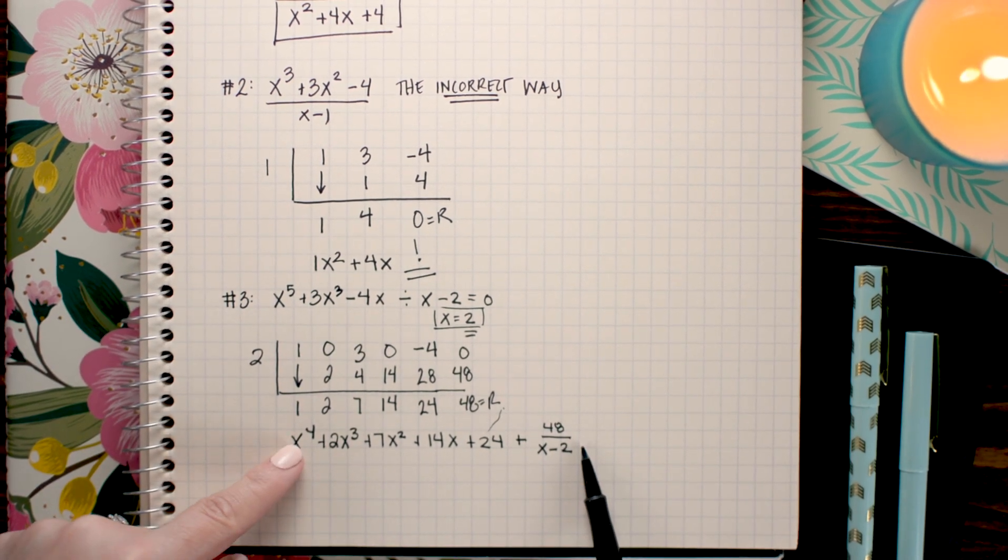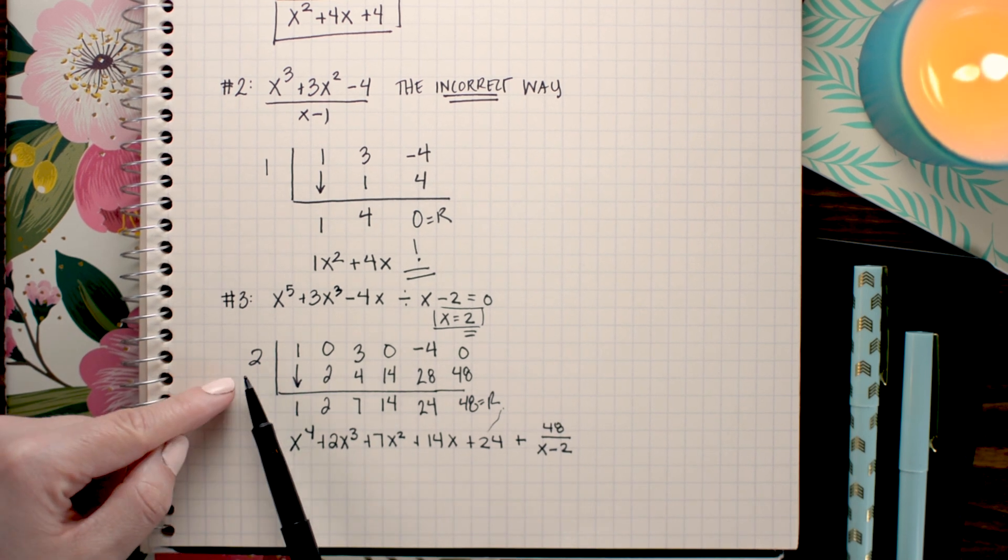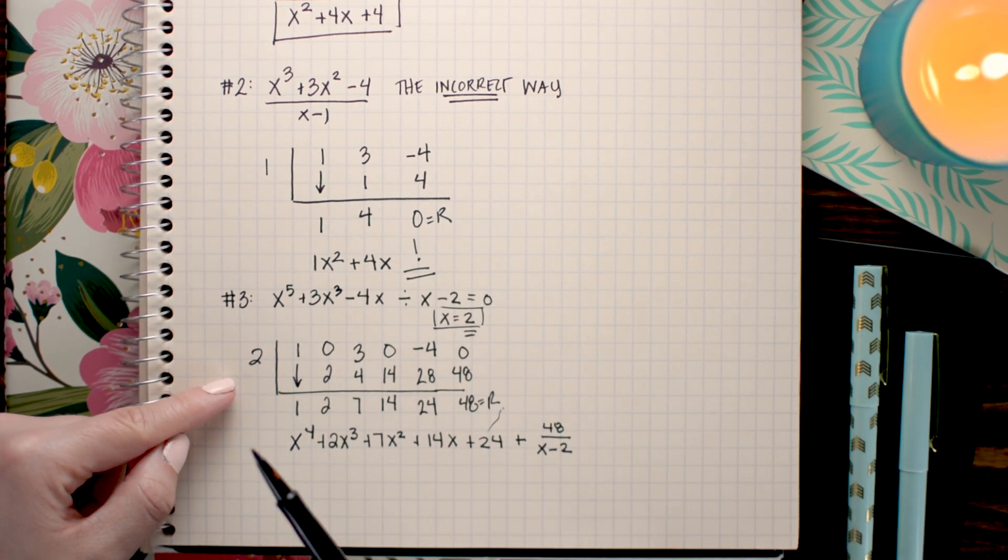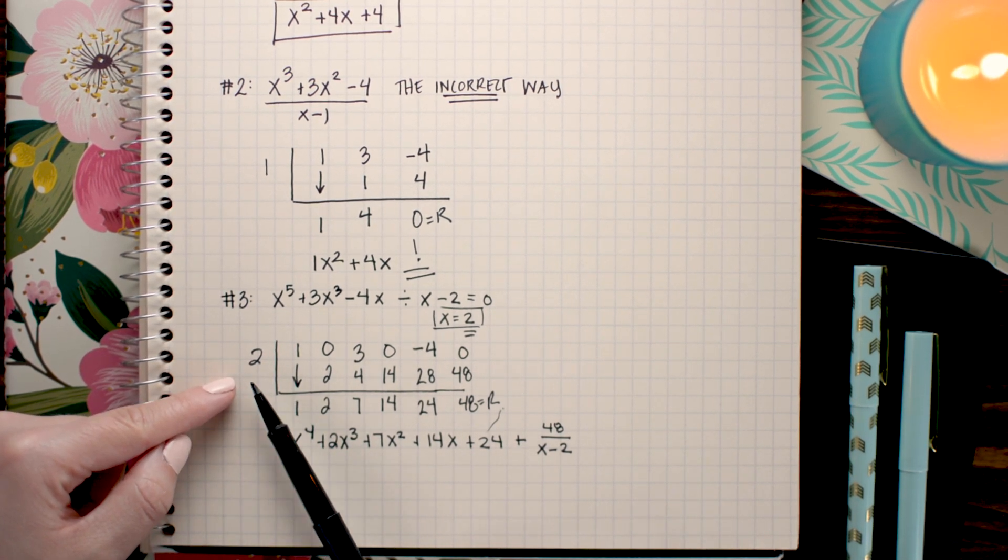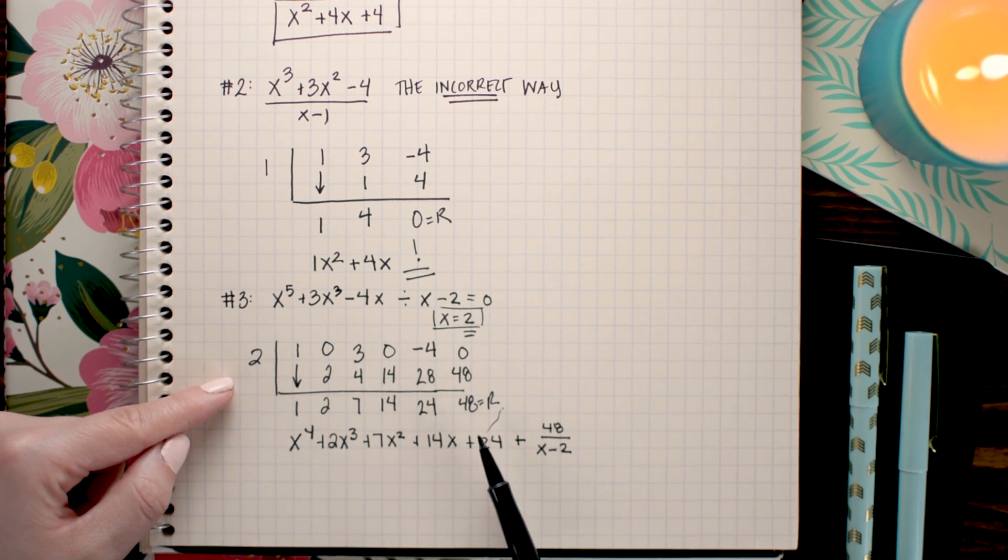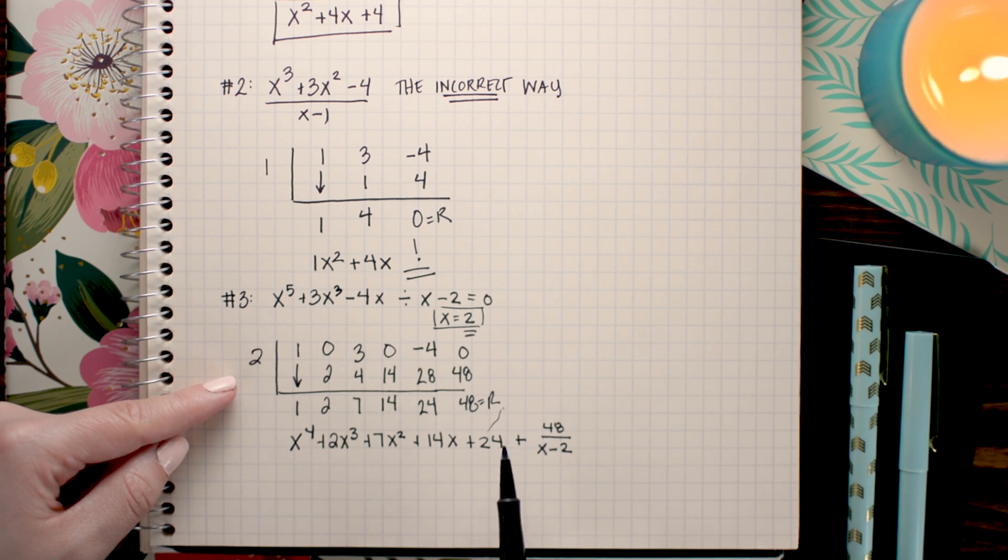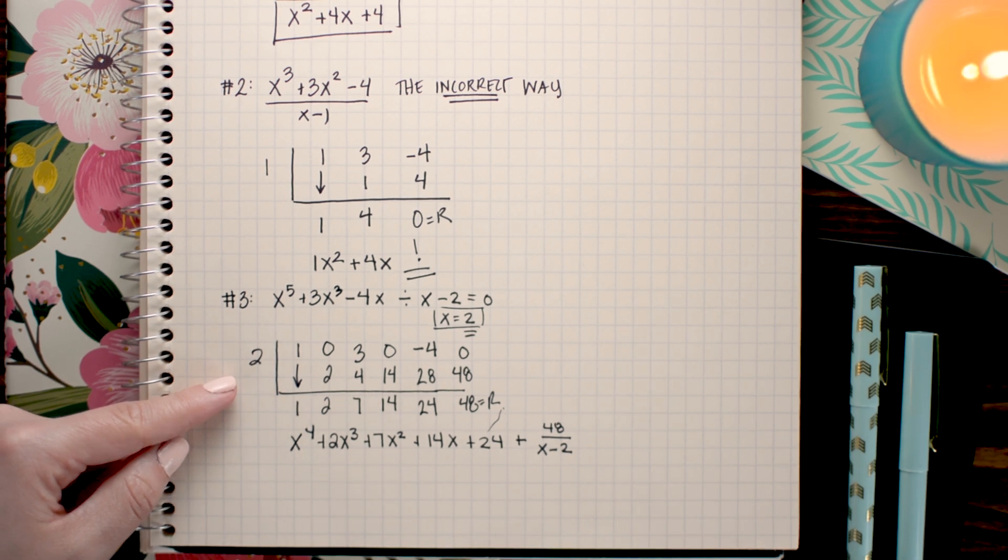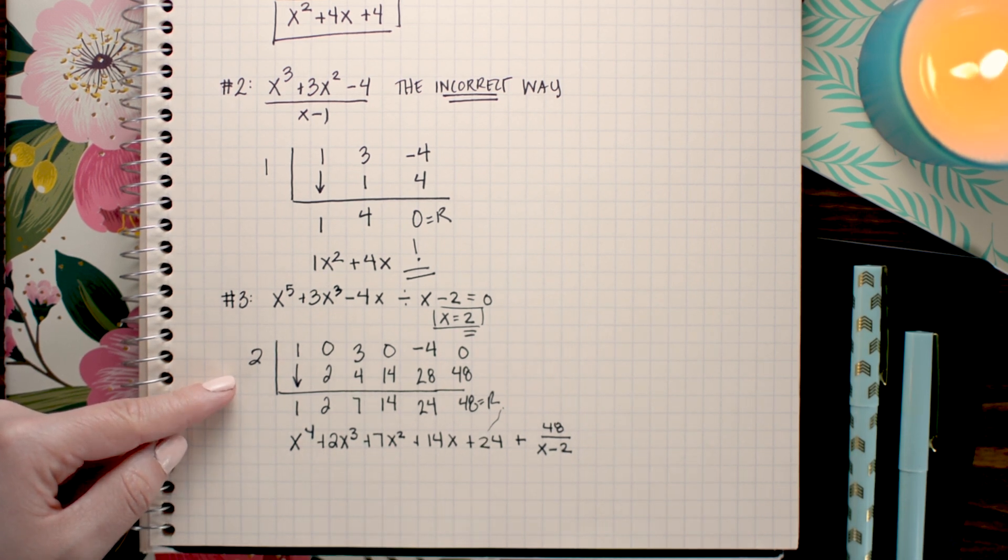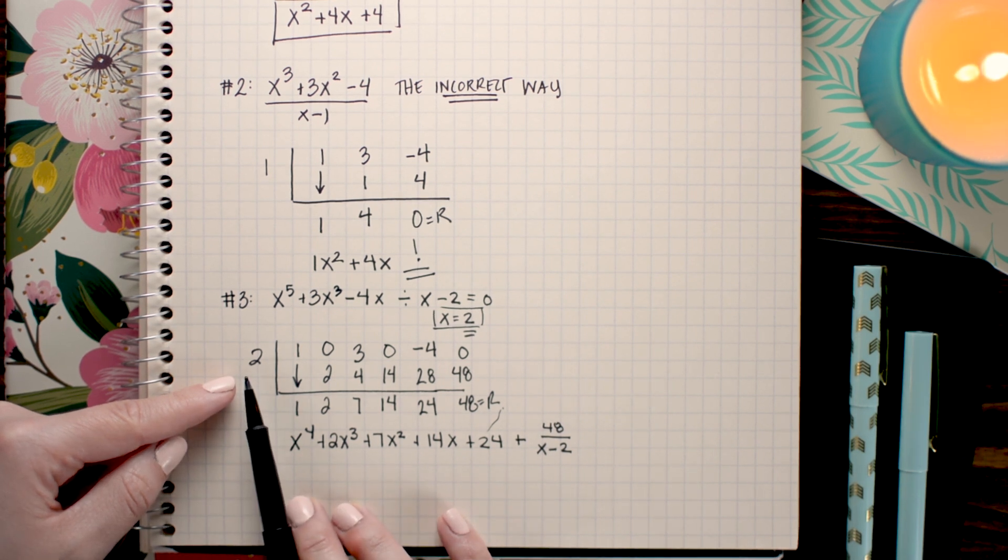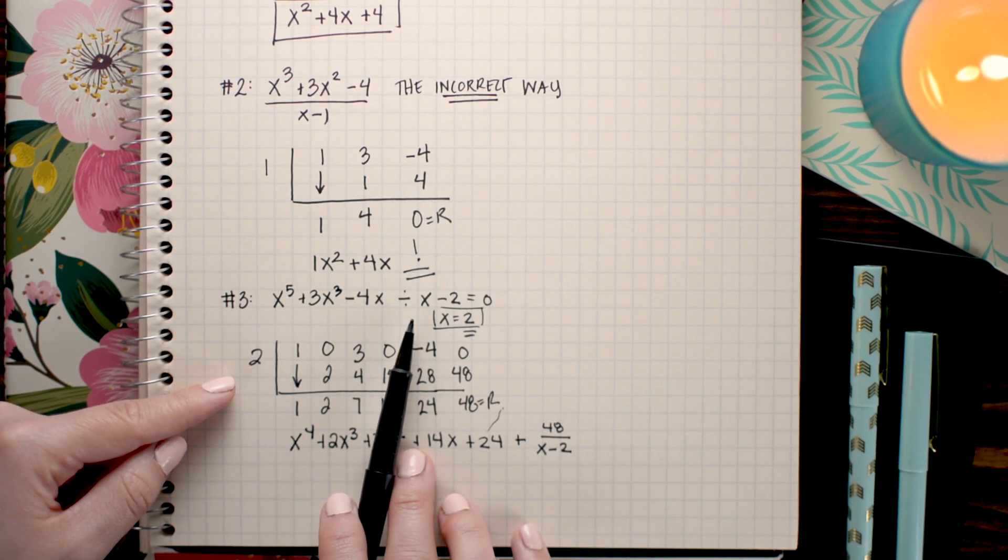A lot of the times you'll be using synthetic division to test whether a value is a zero or a solution. And for that to be a solution you need to have zero as a remainder. Since a lot of you probably are out there using this for those polynomial type problems you need to remember that if there is a remainder it means that 2 is not a solution to your polynomial.